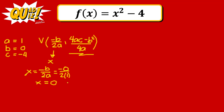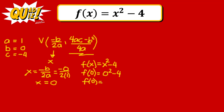To complete the vertex as a point on the Cartesian plane, substitute x equals 0 into the original function. We have f(x) equals x squared minus 4. Substituting 0 gives f(0) equals 0 squared minus 4, which equals negative 4. Therefore, the vertex is at (0, negative 4).